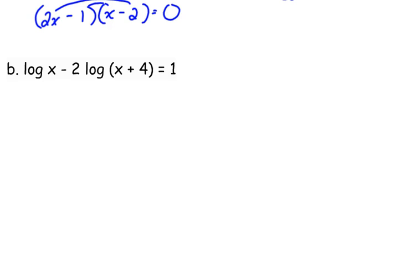We cannot put them together when one of them has a coefficient, so we need to move that coefficient and make it an exponent. So that is the log of x minus the log of x plus 4 squared.